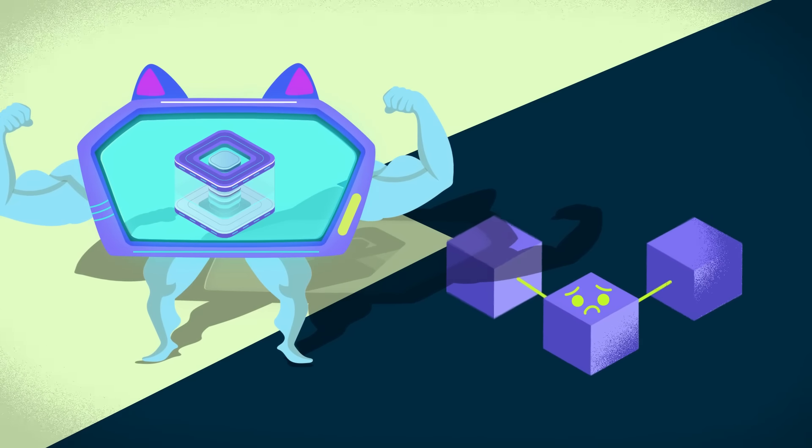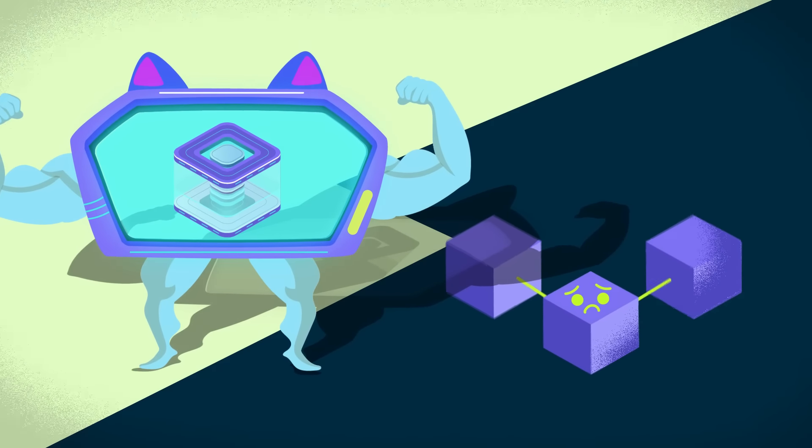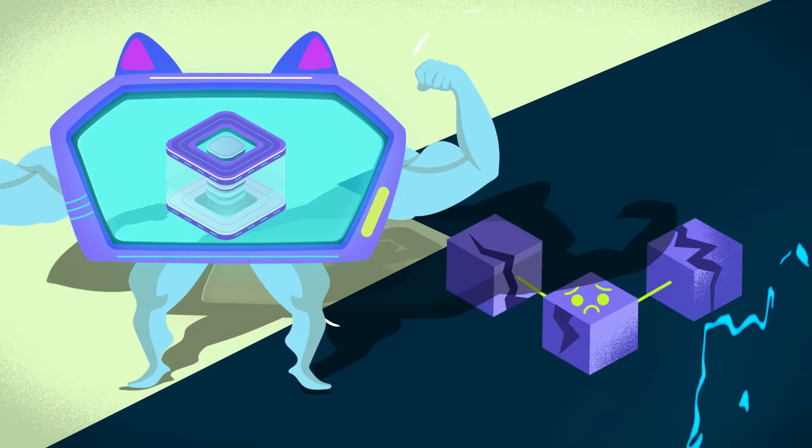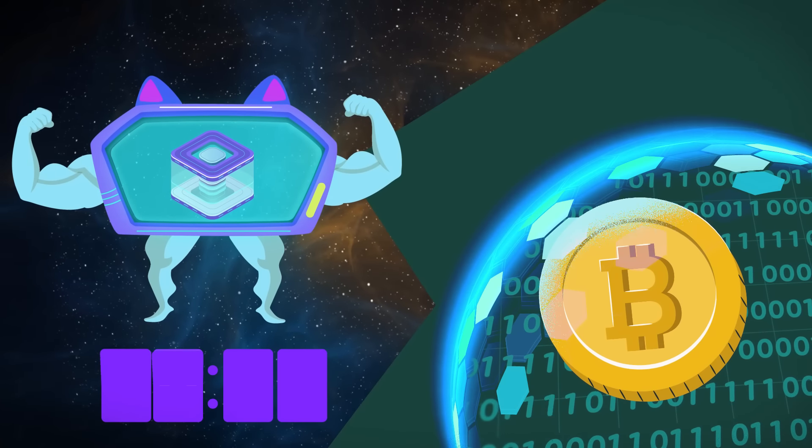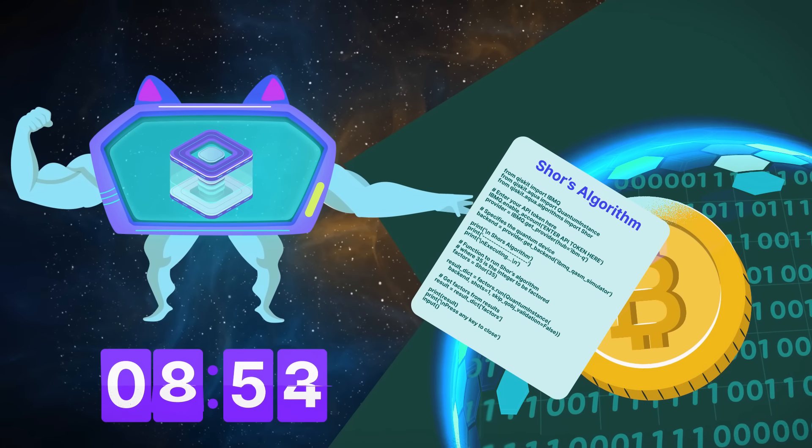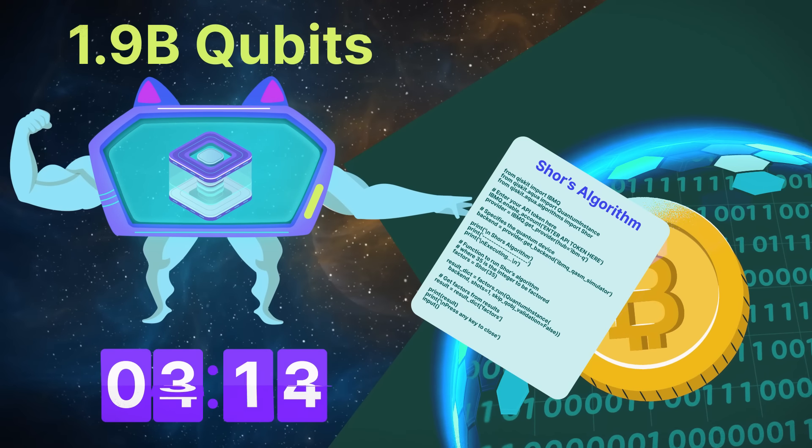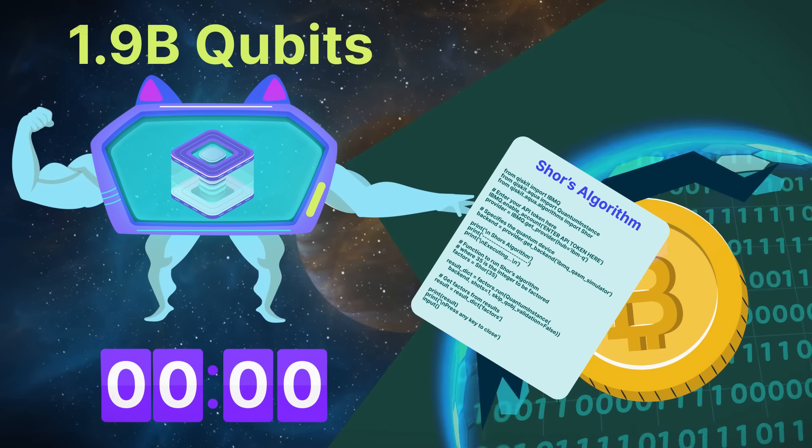Due to the massive computing potential that quantum computers possess, this has led to worries about the danger that it poses to blockchain technology. The encryption that's shielding Bitcoin could be compromised by a quantum computer with a staggering 1.9 billion qubits in just 10 minutes using Shor's algorithm. Sounds a little scary, doesn't it?